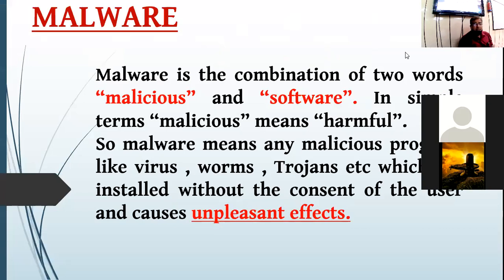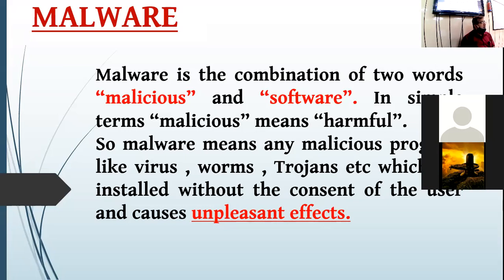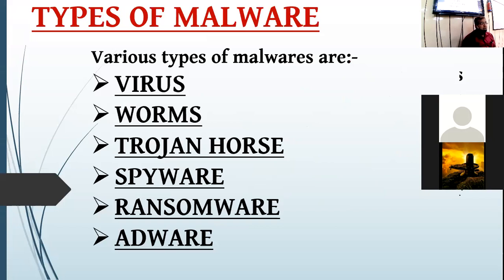Our first concept is malware. Malware is the combination of two words: malicious and software. Malware refers to all the malicious softwares that bring adverse effects to your systems. The various types of malware are: virus, worm, trojan, spyware, adware, and phishing. These types of malware bring adverse effects to the system and hamper our security and safety.